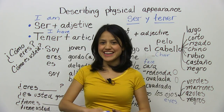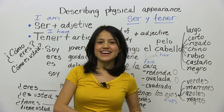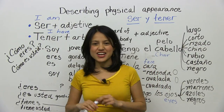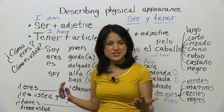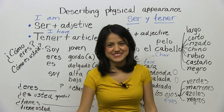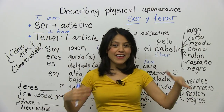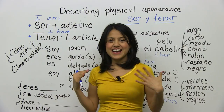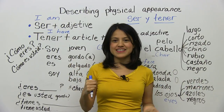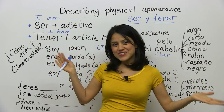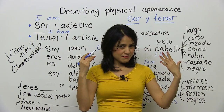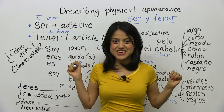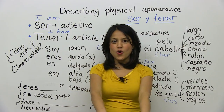Hola, ¿cómo están? Me llamo Ana and welcome to Butterfly Spanish. In today's lesson we're going to learn how to talk about yourself, how to describe yourself. You're going to say I am tall, I have brown eyes, I have blue eyes, I am short, I am fat, I am thin, I am slender — whatever you want to say about you. My eyes are green, my eyes are blue — whatever you want to show off about yourself, you're going to learn it hoy.